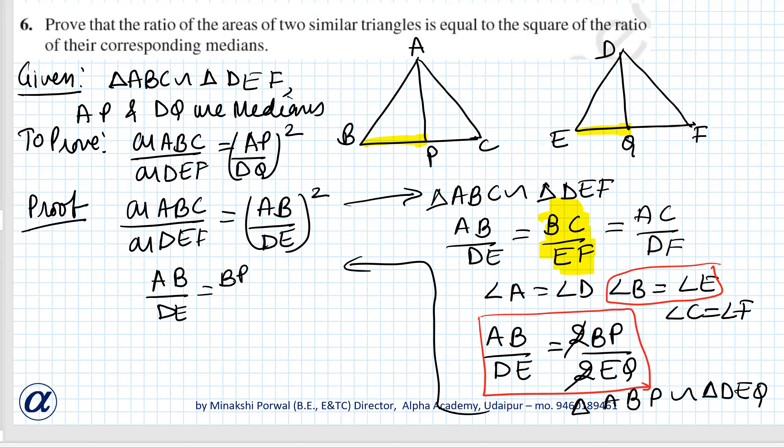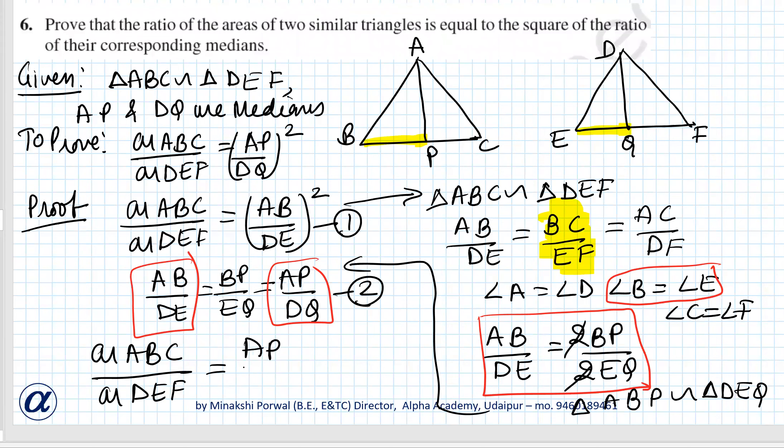equals BP upon EQ equals AP upon DQ. Suppose this is equation 1, this is equation 2. Substituting 2 in 1, area of triangle ABC upon area of triangle DEF equals, instead of AB upon DE, we write AP upon DQ the whole square. We got the result. This is what we wanted to prove, so hence proved.